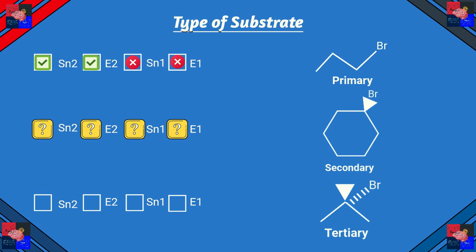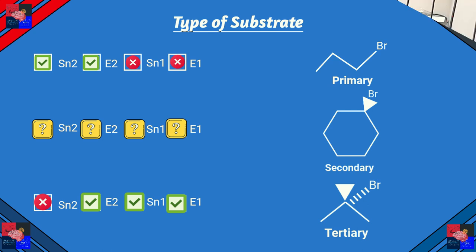A secondary haloalkane does not give us enough information on what can be possible. A tertiary haloalkane has too much steric hindrance for SN2. SN1 is a good candidate, however, because the more substituted a carbocation is, the more stable it is. So E1 is also possible, and so is E2.